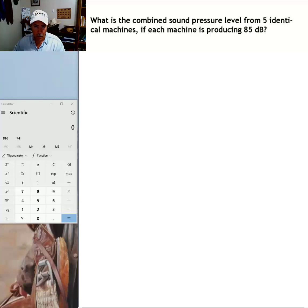Let's go ahead and look at the problem, the practice problem we have here. Okay, what is the combined sound pressure level from five identical machines if each machine is producing 85 decibels?